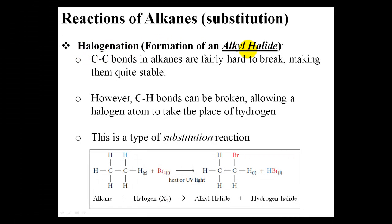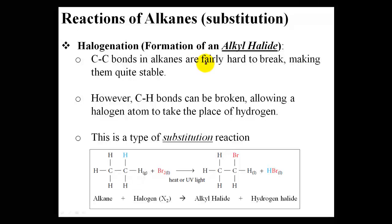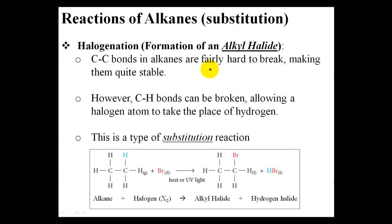We're forming an alkyl halide where we have an alkane, alkene, or alkyne that has a halogen attached to it — that's why it's called an alkyl halide. The C-C bonds in alkanes are fairly hard to break because they are quite stable, but the carbon-hydrogen bonds can be broken fairly easily, allowing a halogen atom to take the place of the hydrogen.